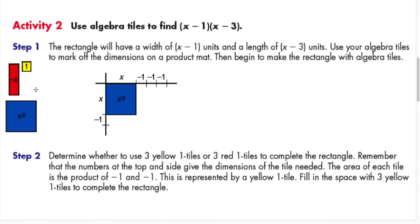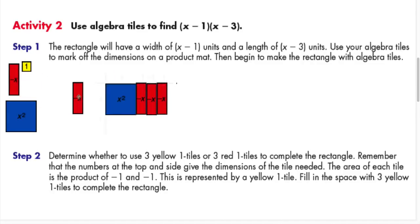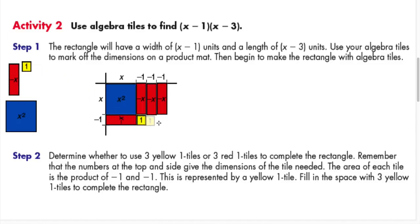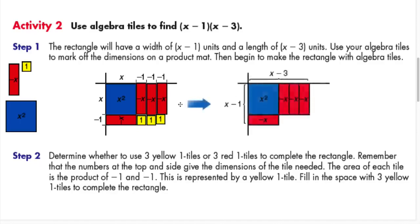x times x gives us x². x times negative 1 gives a negative x-tile. x times negative 1 again, another negative x-tile. x times negative 1, another. Then we lie down the last negative x-tile. Multiplying negative 1 times negative 1 gives a positive unit tile — we place three positive unit tiles in the corner.